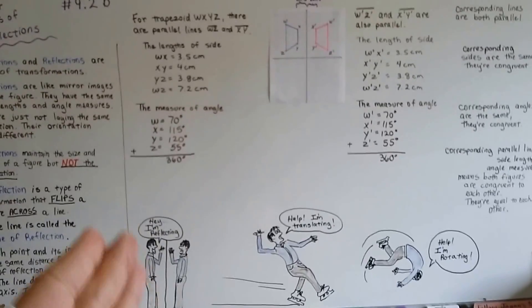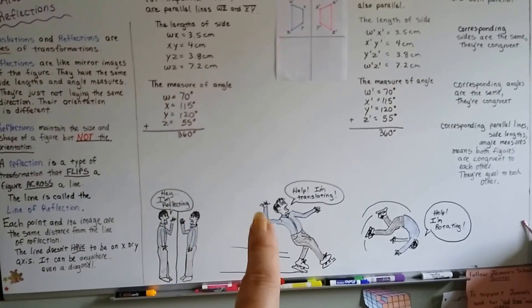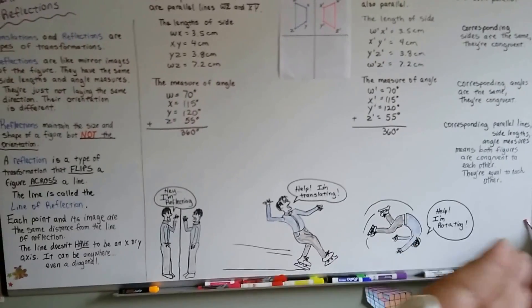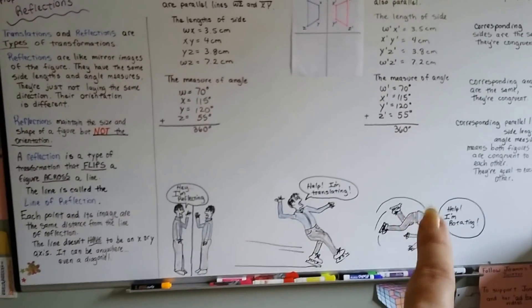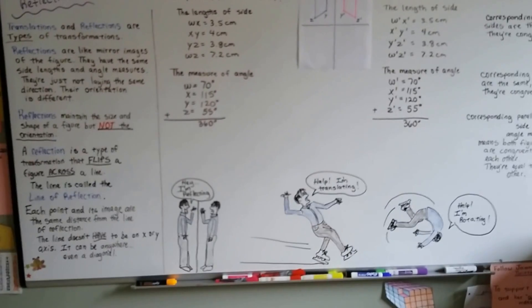Remember, reflection is a mirror image, like these two guys, over that line of reflection. And translating is sliding, like sliding on ice. We haven't gotten to this guy yet. We've only done reflections and translating sliding.